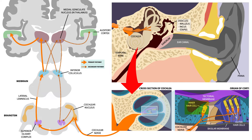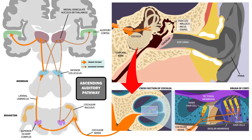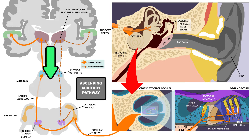How do neural signals travel from hair cells in the organ of Corti to the primary auditory cortex? Let's examine the ascending auditory pathway. Why ascending, you ask? Ascending means information goes to the brain, while descending means information goes from the brain elsewhere.